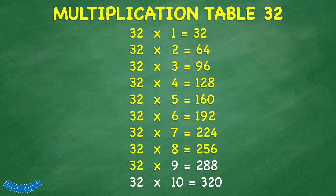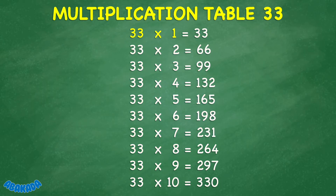32 times 9 equals 288. 32 times 10 equals 320. 33 times 1 equals 33. 33 times 2 equals 66. 33 times 3 equals 99.